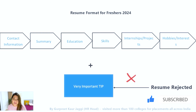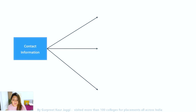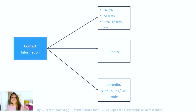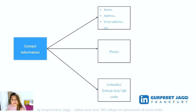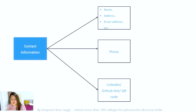Let's start with the contact information section. It should include your name, address, email address, phone number, and your photo. As a recruiter visiting hundreds of colleges where two to three hundred students are applying for fresher roles, I need to be able to remember you and relate your CV to your face. Attaching a photo will always help you stand out and be memorable.